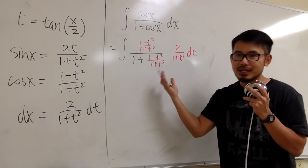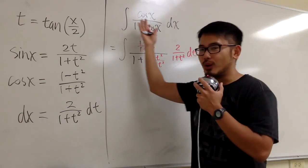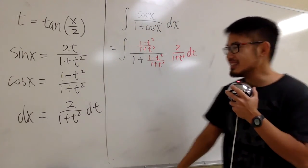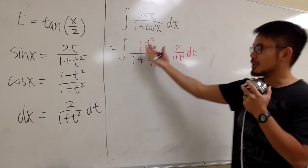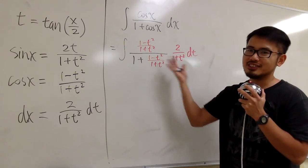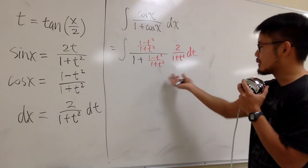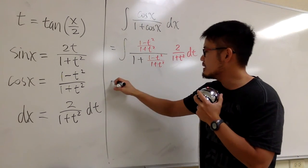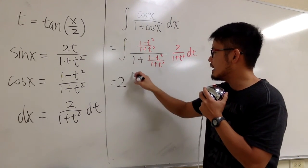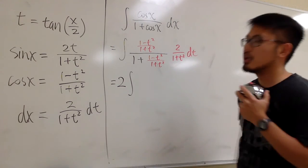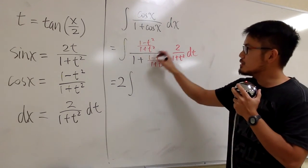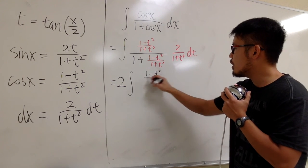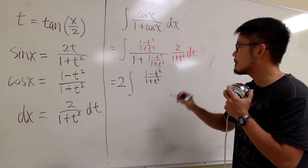And you see, it's kind of convenient. Now we can just take all the things into the t-world with all these ingredients right here. This is a huge fraction, so we have to clean things up a little bit. Let me take the 2 to the front. So we have 2 times the integral, and then on the top we keep it as (1 - t²)/(1 + t²).